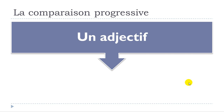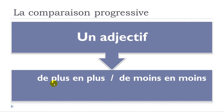So let's see now how to construct that if we want to combine it with un adjectif. In that case, it will be quite simple. You will need to use de plus en plus — you make the liaison de plus en plus — and then here de moins en moins, but then you make the liaison de moins en moins.